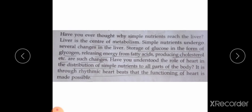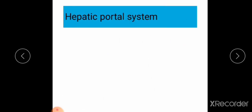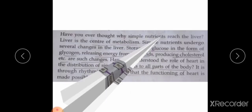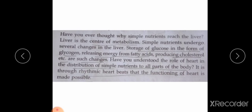After these changes, blood is carried by the hepatic vein to the vena cava. The vena cava then carries that nutrition-rich blood to the heart — specifically to the right atrium. This is the hepatic portal circulation, which takes place between the intestine and the liver. This is how simple nutritions absorbed from the small intestine into the blood reach the heart. It is through rhythmic heartbeats that the functioning of the heart is made possible.